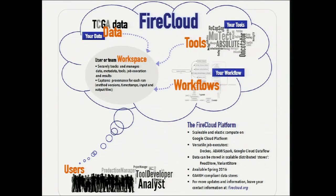FireCloud allows you to take your data, your tools, and your workflows and put them in either a user or team workspace where you can securely track and manage your data, metadata, tools, job execution, and results. It also allows you to capture provenance for each run. There are versatile job executors including Docker, Adam Spark, and Google Cloud Dataflow. Data can be stored in distributed stores called ReadStore and VariantStore.